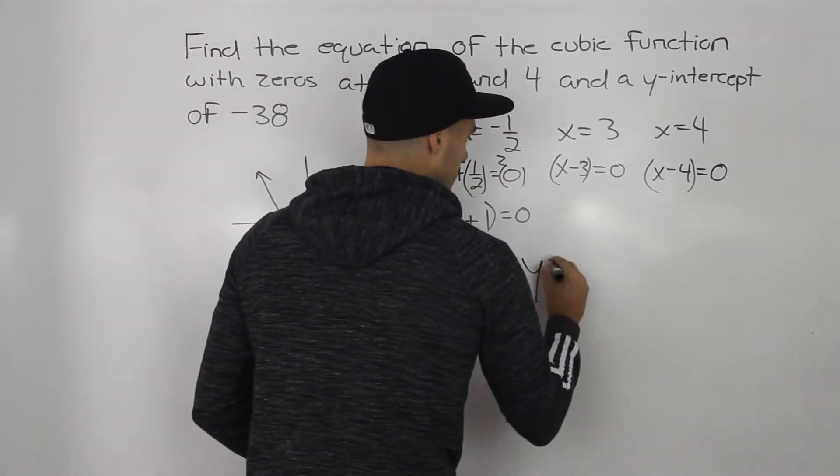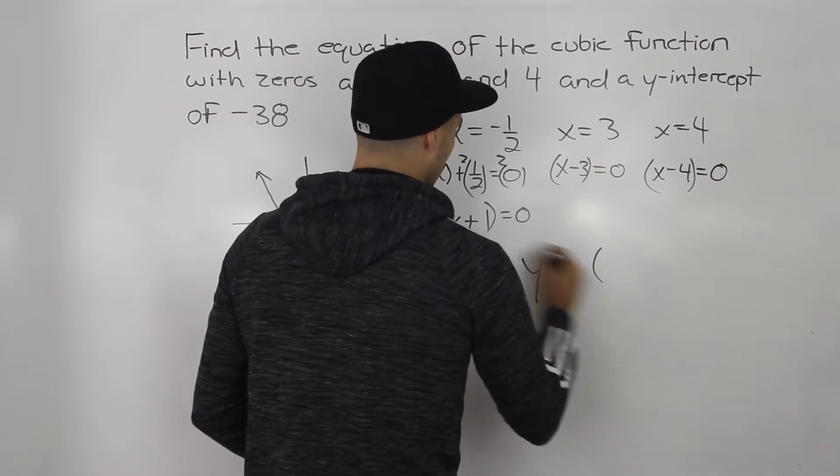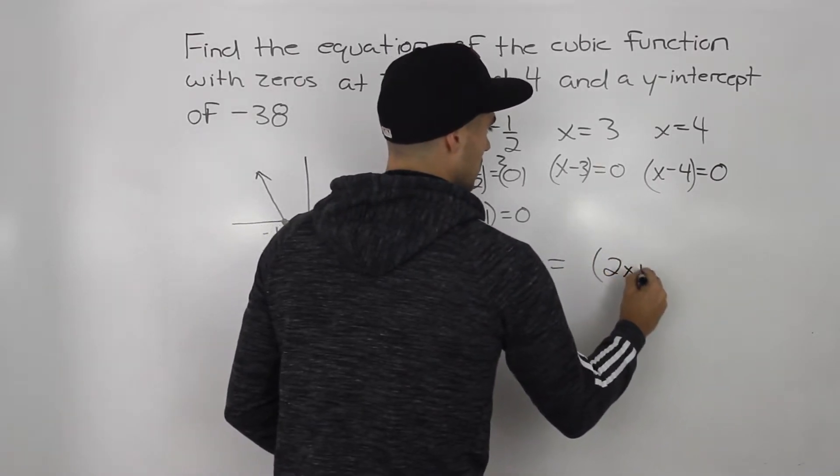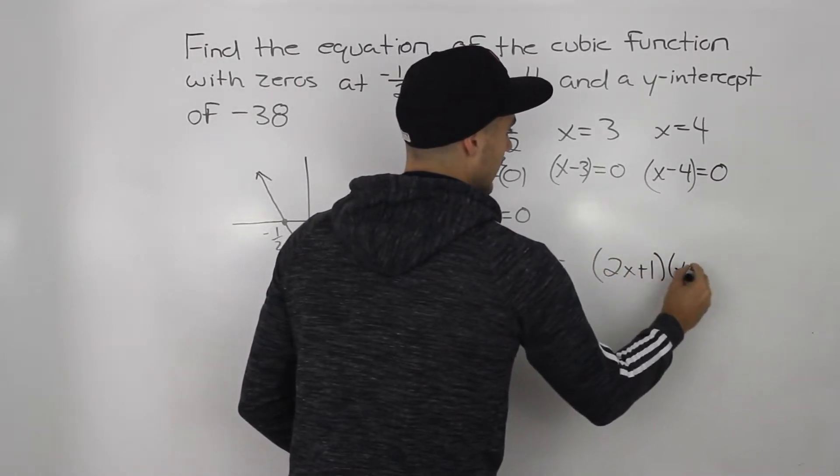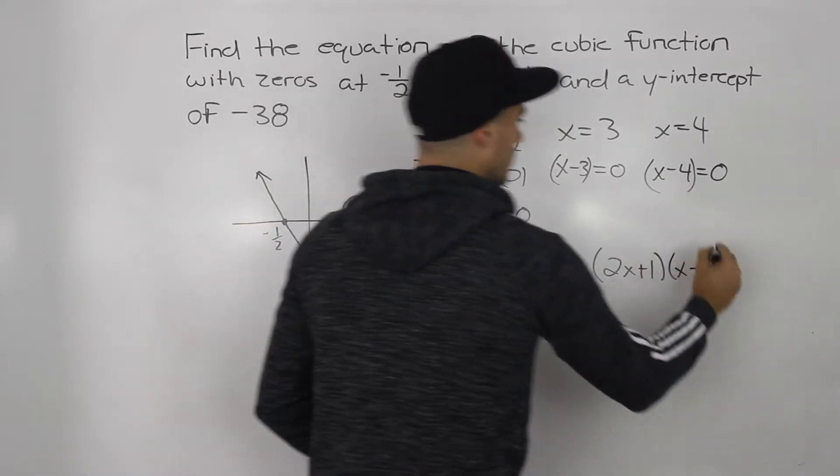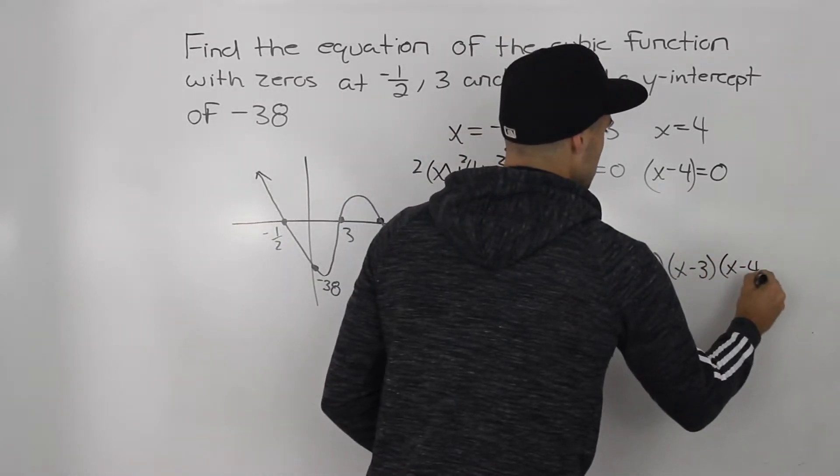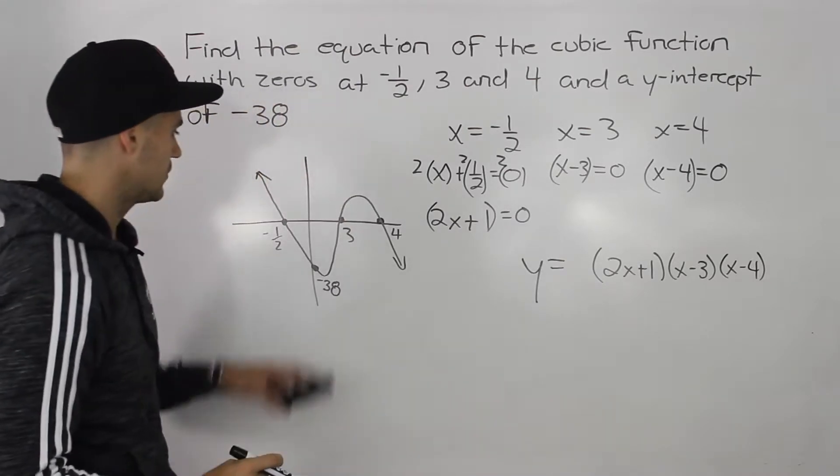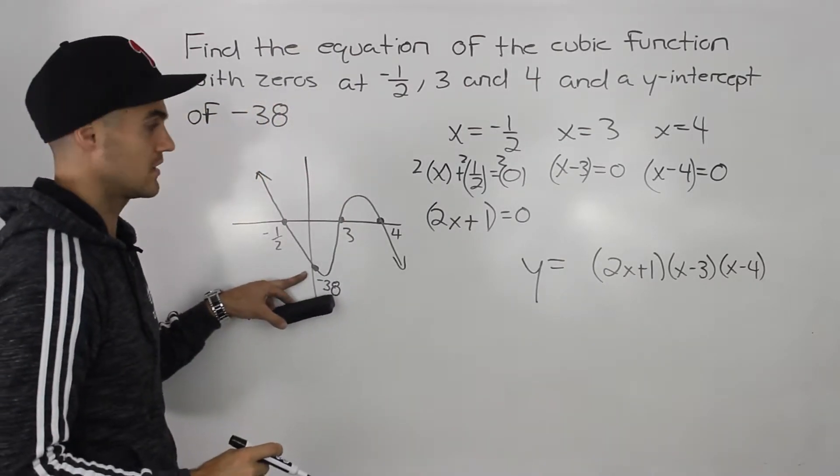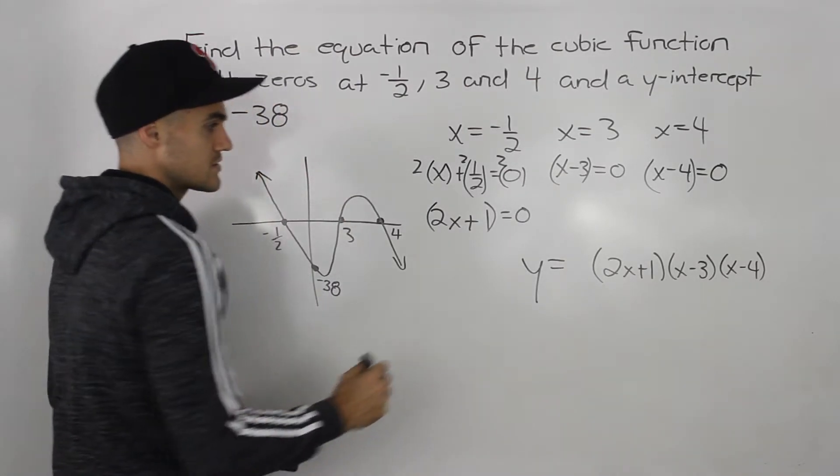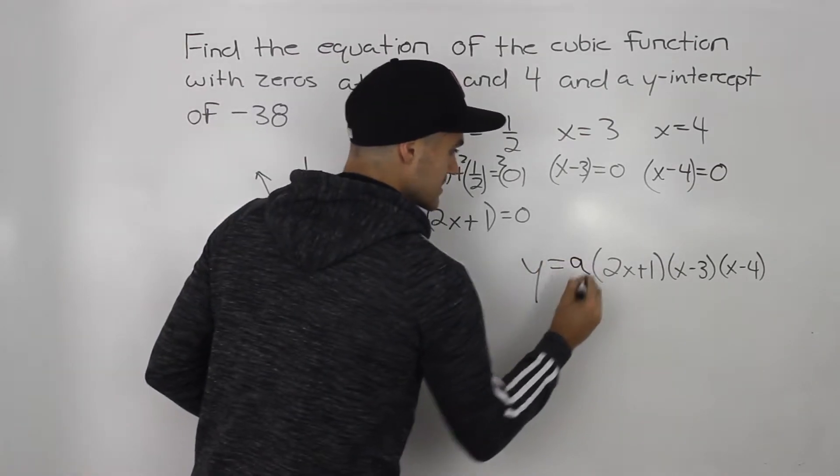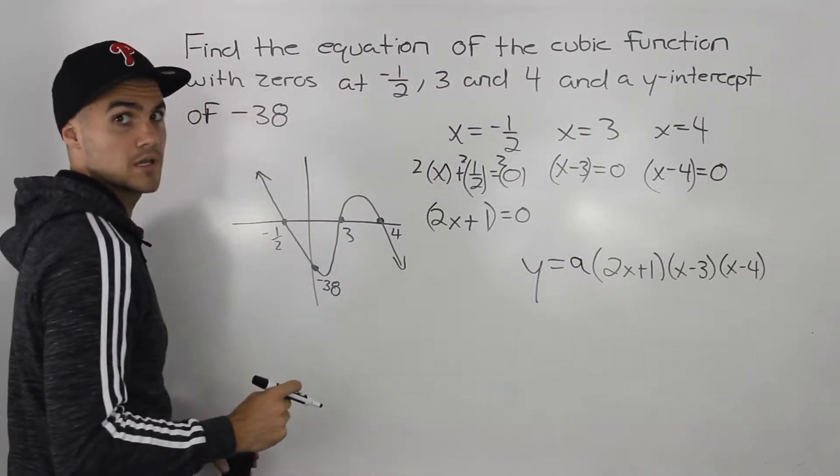So if we combine all of these in an equation, what we'll have is 2x plus 1, we'll have x minus 3, and we'll also have x minus 4. However, notice that there's also this y-intercept of negative 38. So we have to solve for what's that constant a in front going to be.